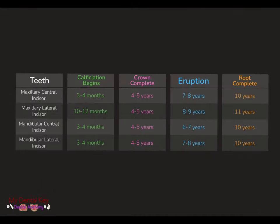Mandibular central incisors calcify at three to four months, complete their crowns at four to five years, erupt at six to seven years, and complete their roots at ten years.